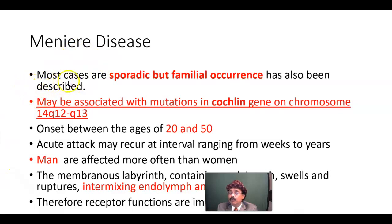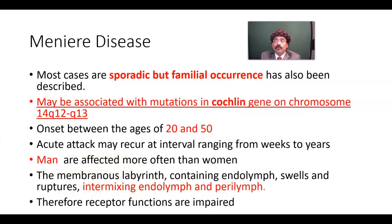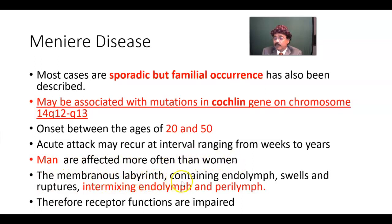Regarding causes of Meniere disease: most cases are sporadic, but familial occurrence has also been described. It may be associated with a mutation in a cochlear gene on chromosome 14q12-q13, suggesting genetic support that it may run in families or occur sporadically without family history. Onset is typically between the ages of 20 to 50. Acute attacks may occur at intervals ranging from weeks to years. Men are more affected than women. The membranous labyrinth containing endolymph swells and ruptures, intermixing endolymph and perilymph, impairing both vestibular and cochlear receptor functions.